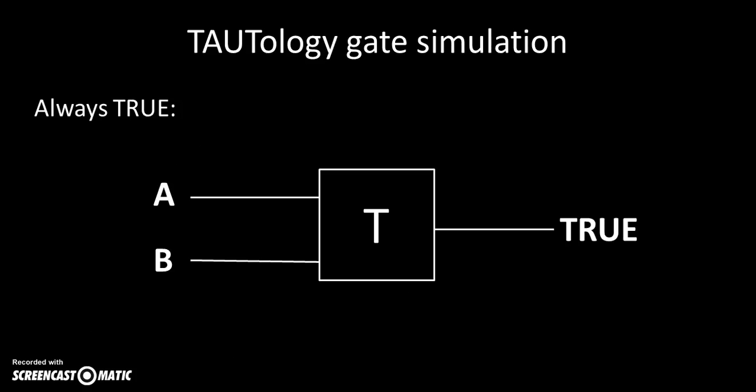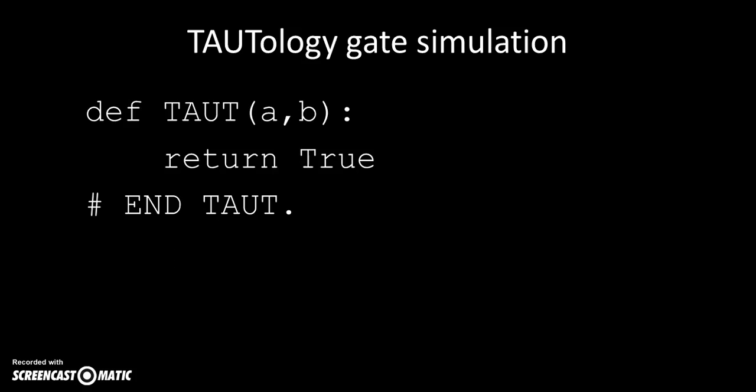There are other gates as well, like the tautology gate, which is always true. So whatever two parameters come in, we just return true anyway.